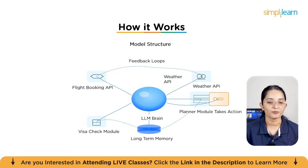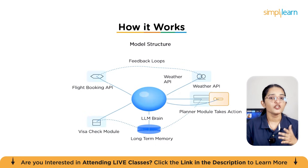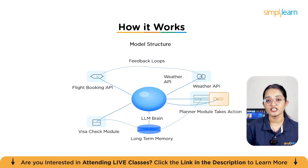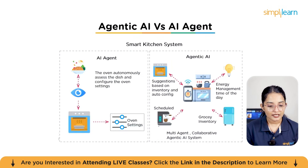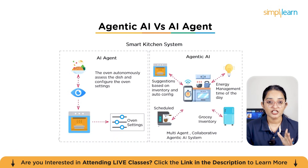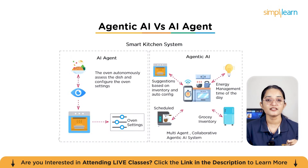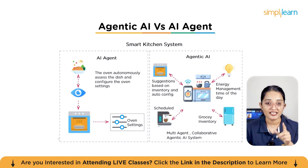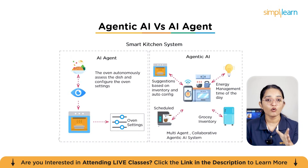In short, agentic AI works like a smart team with a leader, memory, and the ability to adapt on the go, making it much more powerful than just a single chatbot. Now, you might still be confused about the difference between AI agents and agentic AI, so let's use a simple smart kitchen example. On the left side we have AI agent, and on the right side we have agentic AI. Imagine an oven that looks at the dish you've placed inside — it understands what it is and automatically sets the right temperature and cooking mode. That's an AI agent: smart, but handling only a single task.